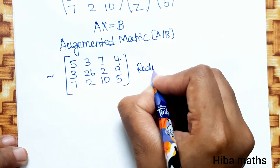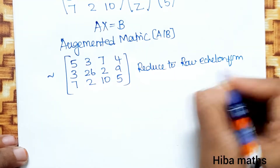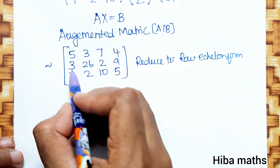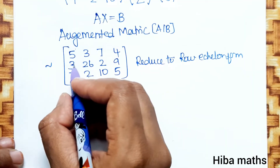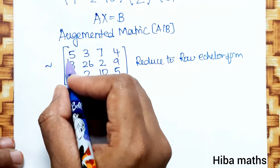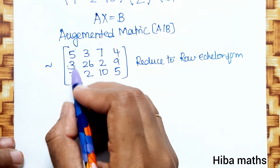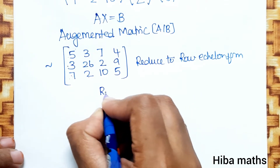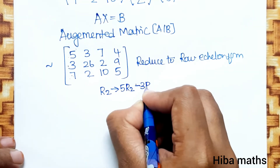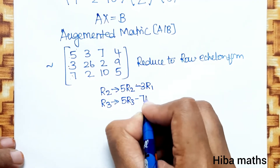We reduce to row echelon form. The row operations are: R2 changes — 5 times R2 minus 3 times R1. Similarly, R3 changes — 5 times R3 minus 7 times R1.